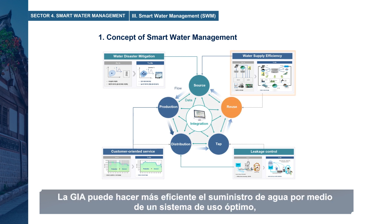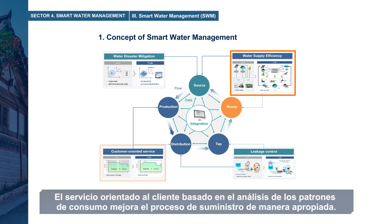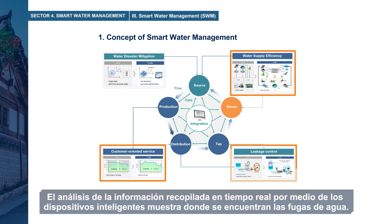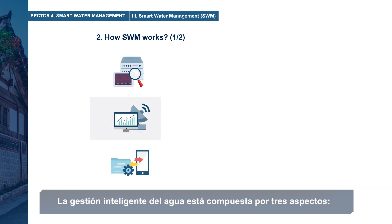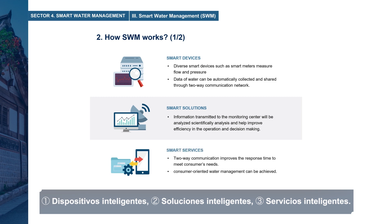SWM can bring water supply efficiency through optimal utilization systems and advanced flood and drought control. Customer-oriented service, based on analysis of consumption patterns, improves the supply process appropriately. Moreover, SWM is capable of identifying leakage incidents quickly. Real-time analysis of information collected from smart devices shows where water leakage is occurring. Smart water management is composed of three aspects: smart devices, smart solutions, and smart services.